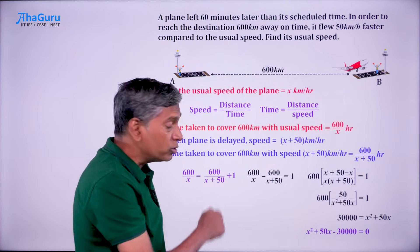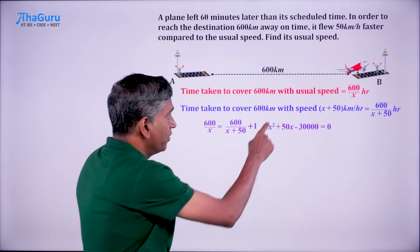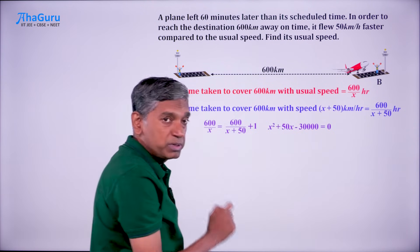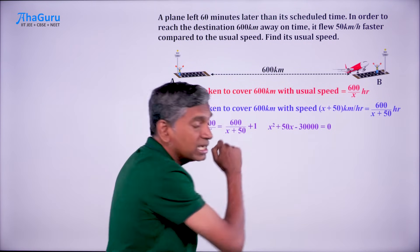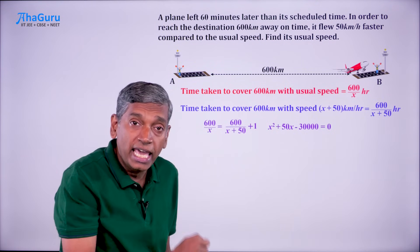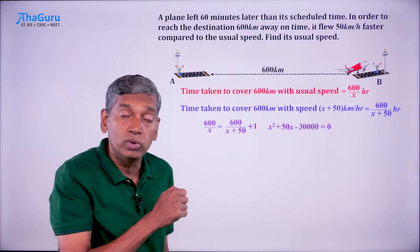x squared plus 50x minus 30,000 equals 0. We have taken the usual speed as x, this speed as x plus 50. From this equation, we got this quadratic equation of the form ax squared plus bx plus c equals 0.